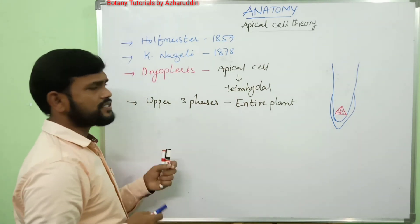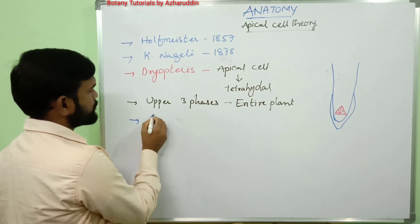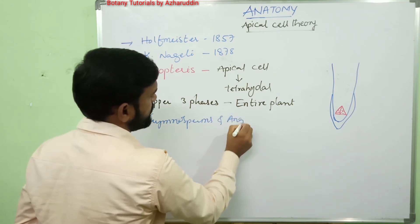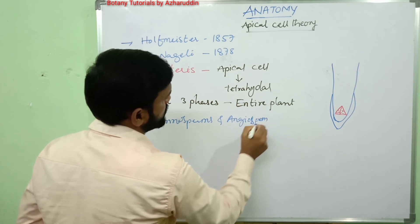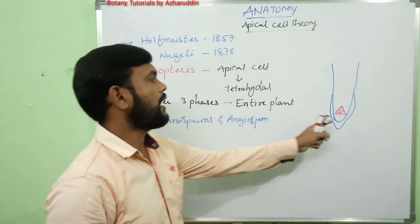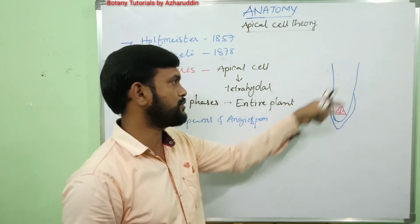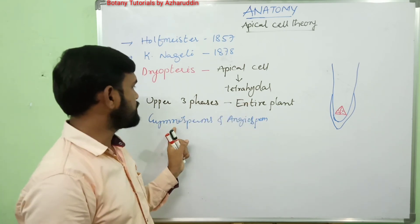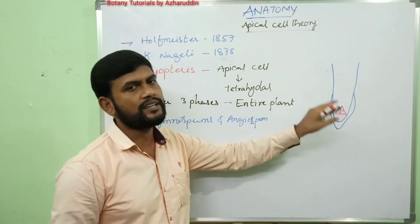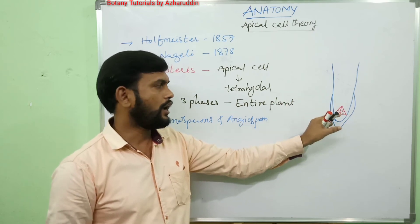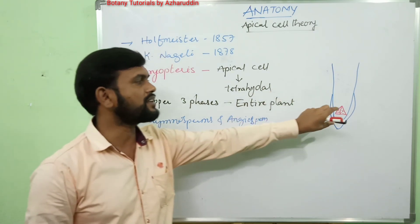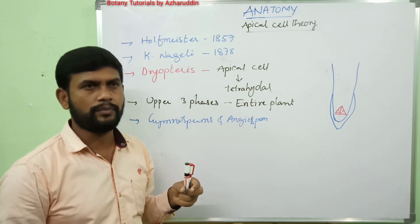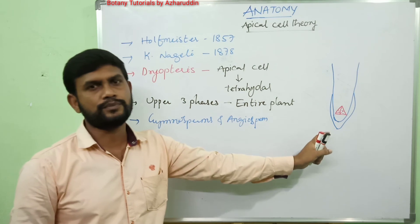Later, it was assumed that in gymnosperms and angiosperms, the root apex also contains a single apical cell responsible for tissue formation. However, later studies revealed that in gymnosperms and angiosperms, a single cell is not responsible; instead, a group of meristematic cells is present, and they form the complete tissue in the plant body. So the Apical Cell Theory was replaced by other theories.